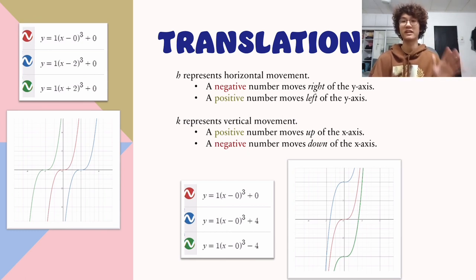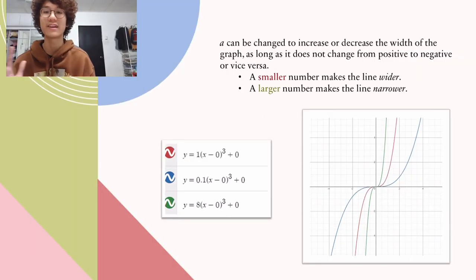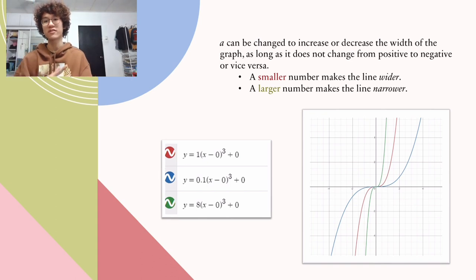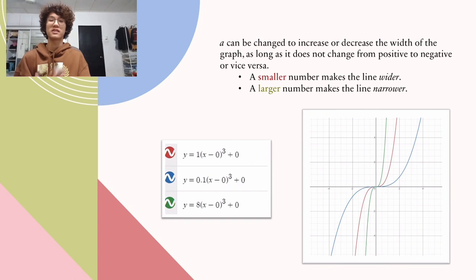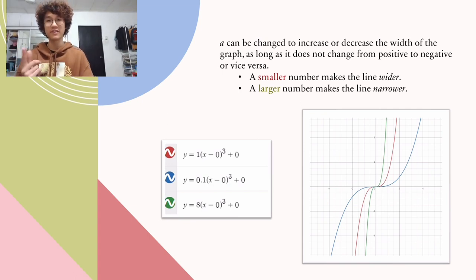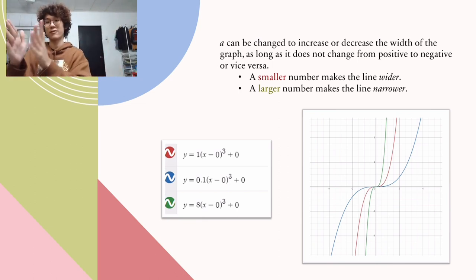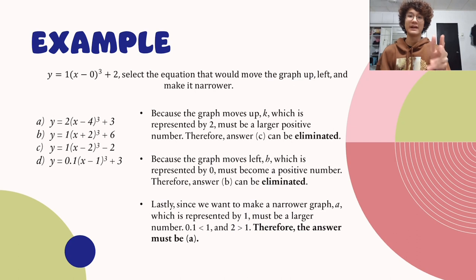To move the graph up or down, adjust k. A negative k moves it down; a positive k moves it up. To make the line narrower or wider, increase or decrease a without changing its sign — changing the sign will flip the equation. A smaller value of a means wider; a larger value means narrower.